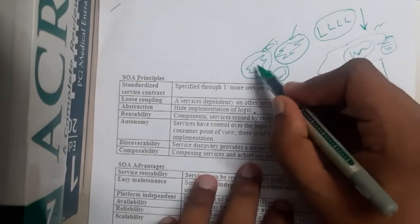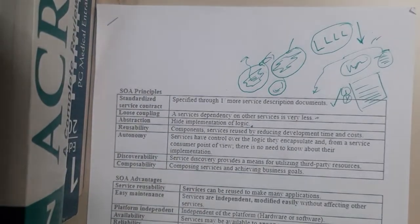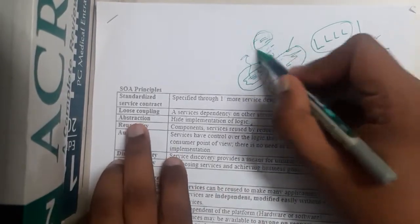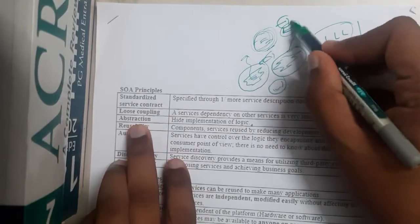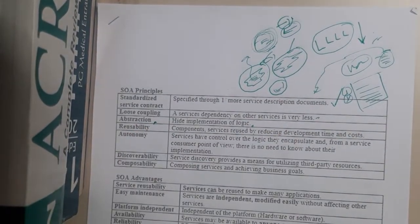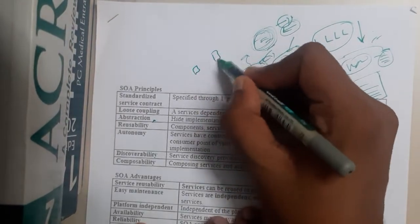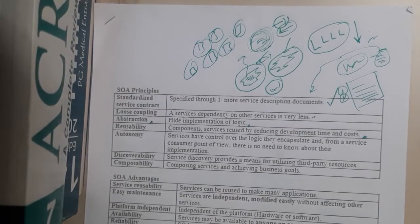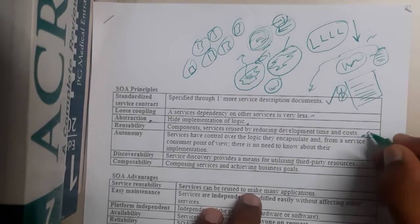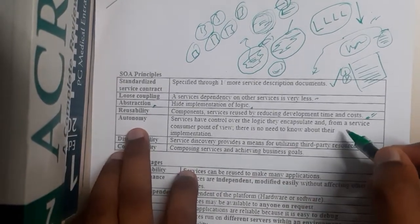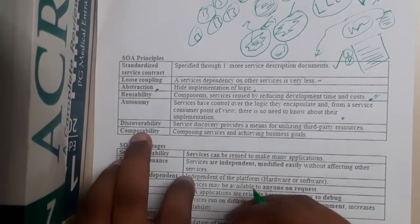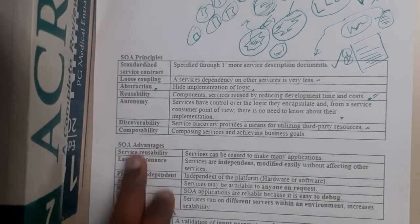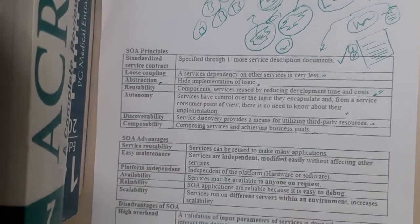Third, abstraction: when a user uses Gmail, there are hundreds or thousands of lines of code executing. The code, server interactions, and error handling should all be hidden from the user — that concept of hiding things is abstraction. Fourth, reusability: if a component is the same across all Google websites, they can reuse a single login page rather than creating multiple ones individually, storing all login IDs in one database. Fifth, autonomy: services should be independent and the architecture should be clear. Sixth, discoverability: applications should be open and accessible. Seventh, composability: it should reach the required business goals.